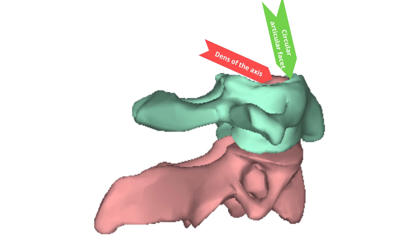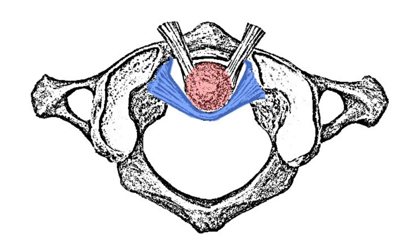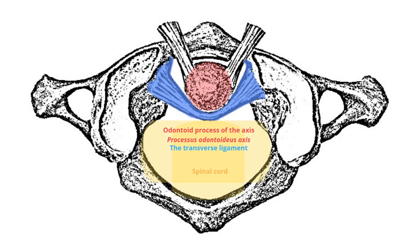The circular inferior facets articulate with the superior facets of the axis, C2, to form the lateral atlantoaxial joints. The paired lateral atlantoaxial joints work in conjunction with the median atlantoaxial joint to produce the rotational motion of the head. A tubercle known as the transverse ligament tubercle is located on the medial surface of each lateral mass. This tubercle is the attachment point for the transverse ligament, which stabilizes the odontoid process of the axis, C2. The transverse ligament divides the vertebral canal into an anterior compartment and a posterior compartment. The anterior third is occupied by the dens of the axis, while the posterior compartment is occupied by the spinal cord and its sheaths.